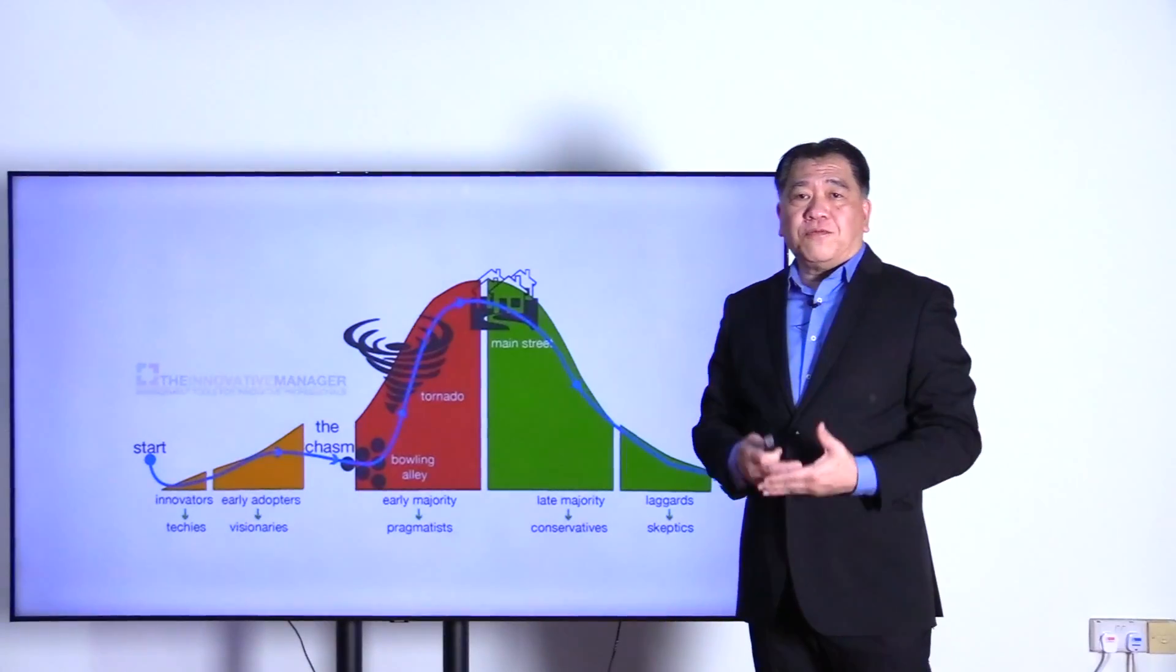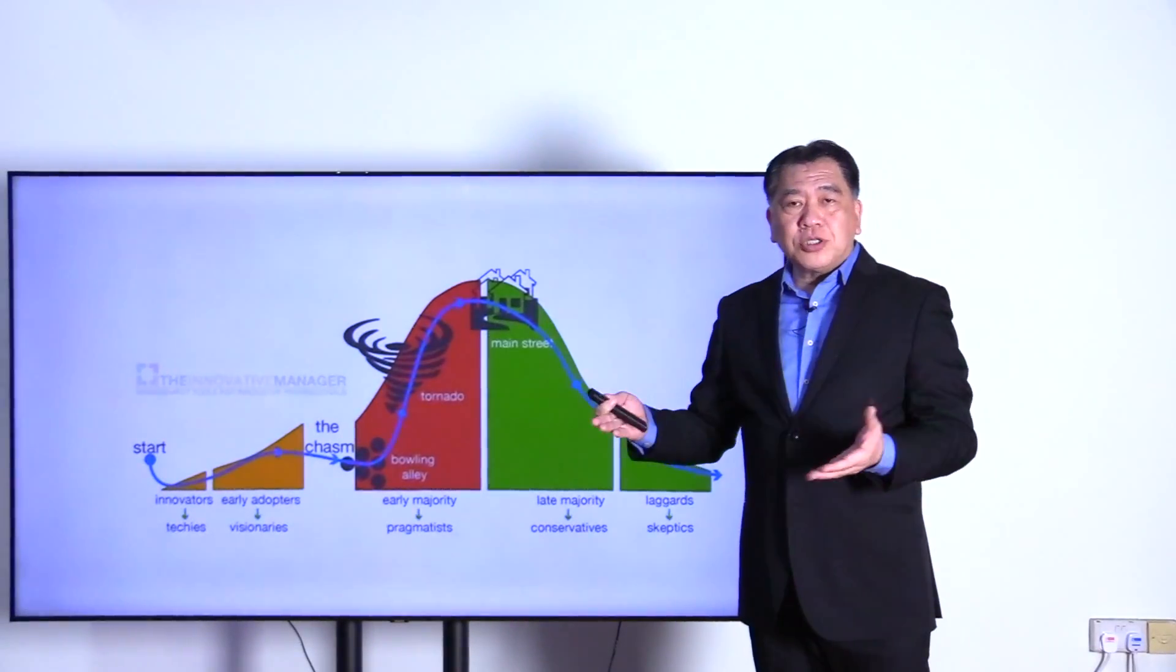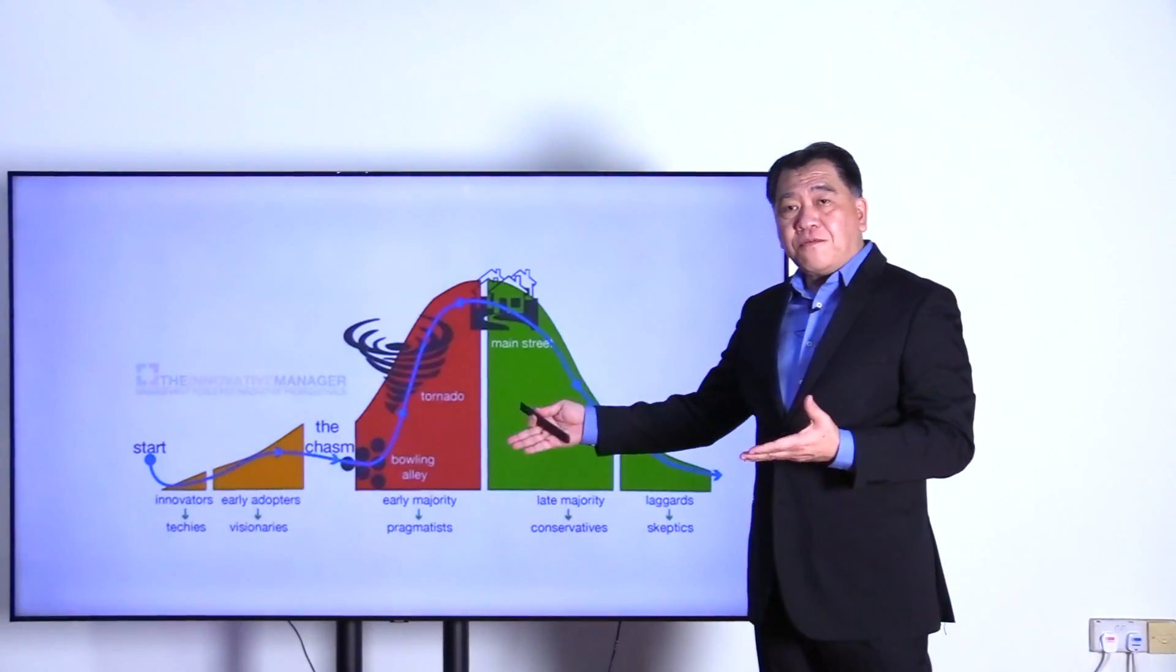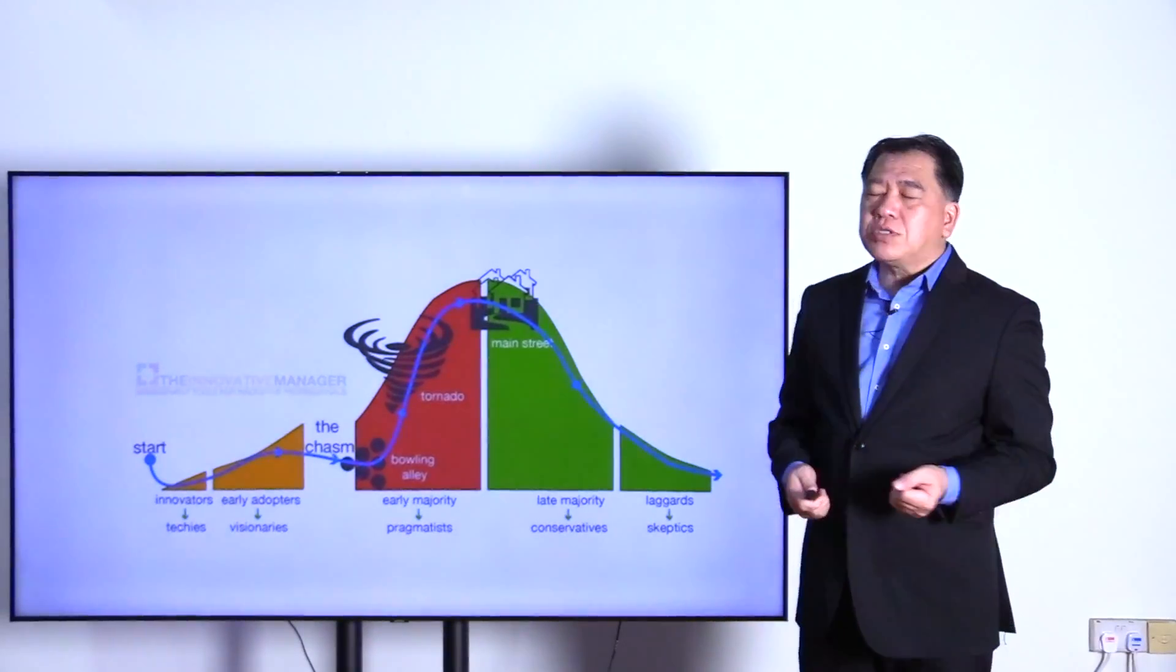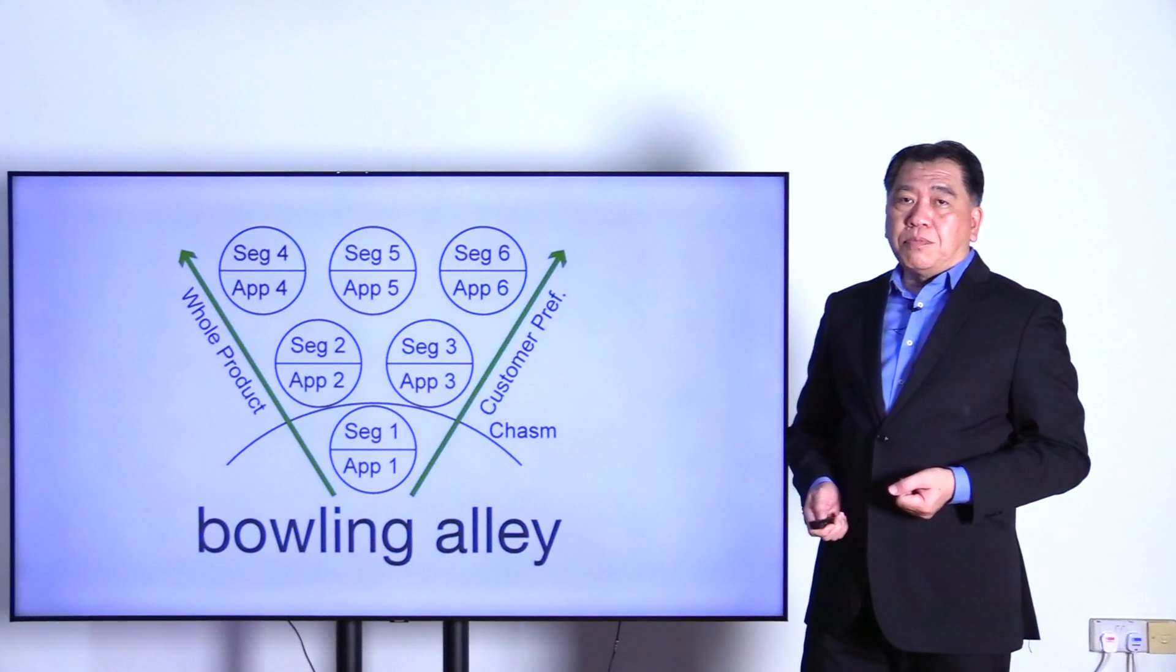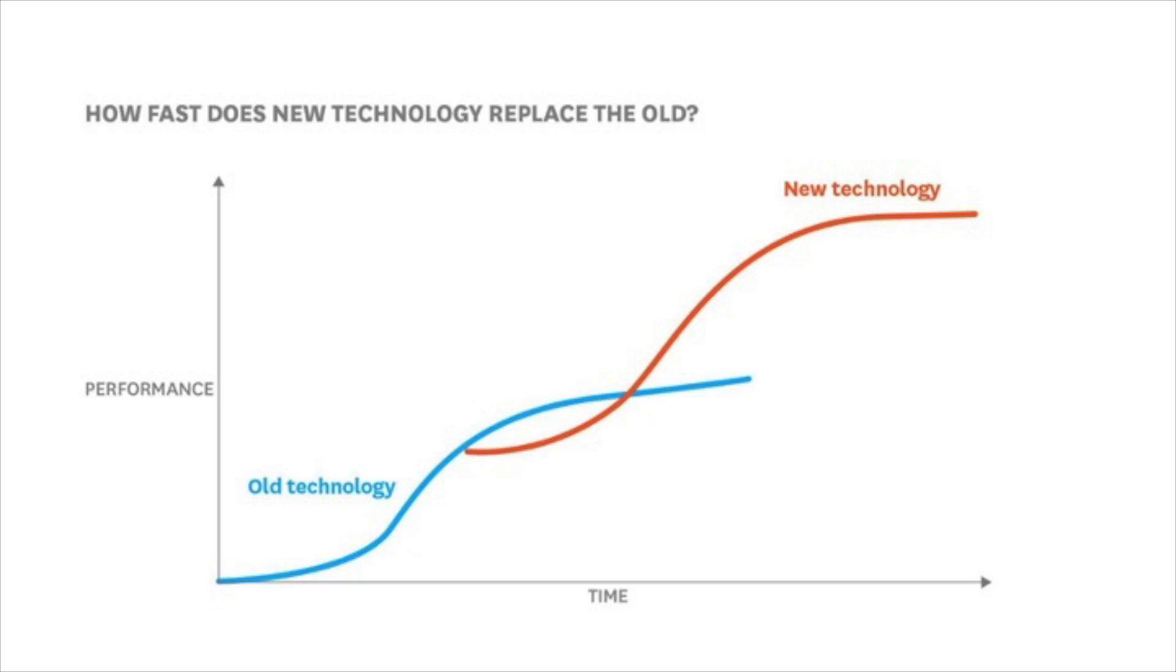We talk about the chasm where the late market and early market are quite different. Geoffrey Moore says there are many options here, and you have to choose some strategy to cross the chasm, mainly the bowling pin strategy.